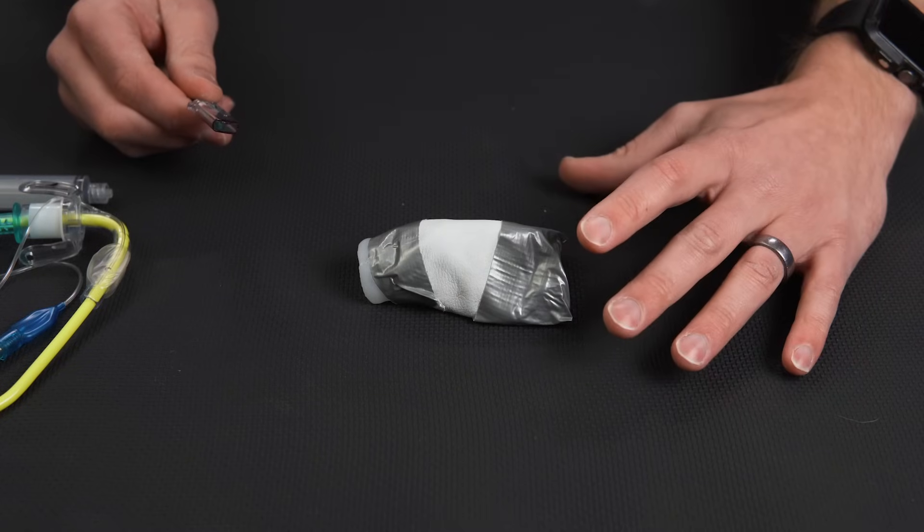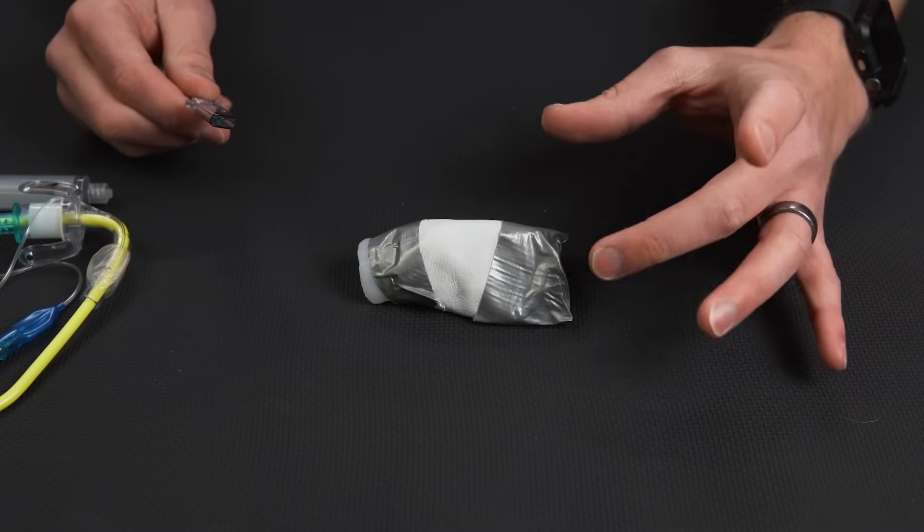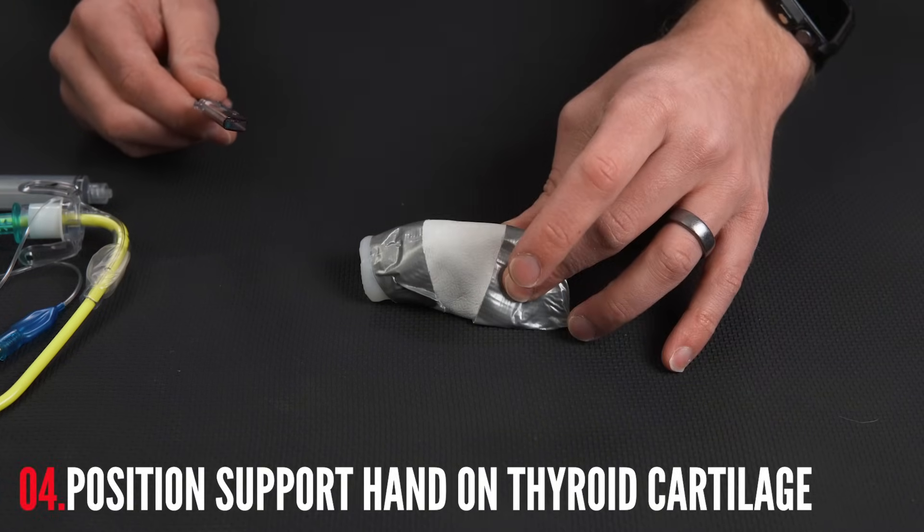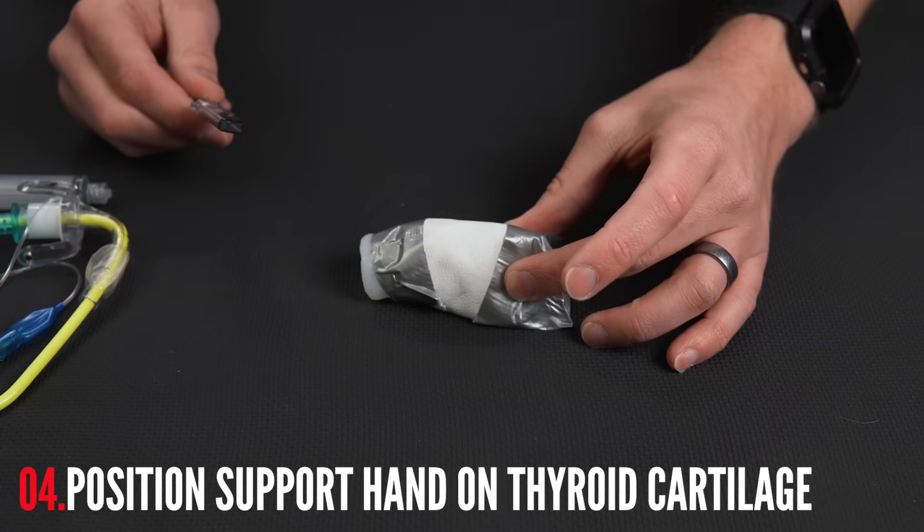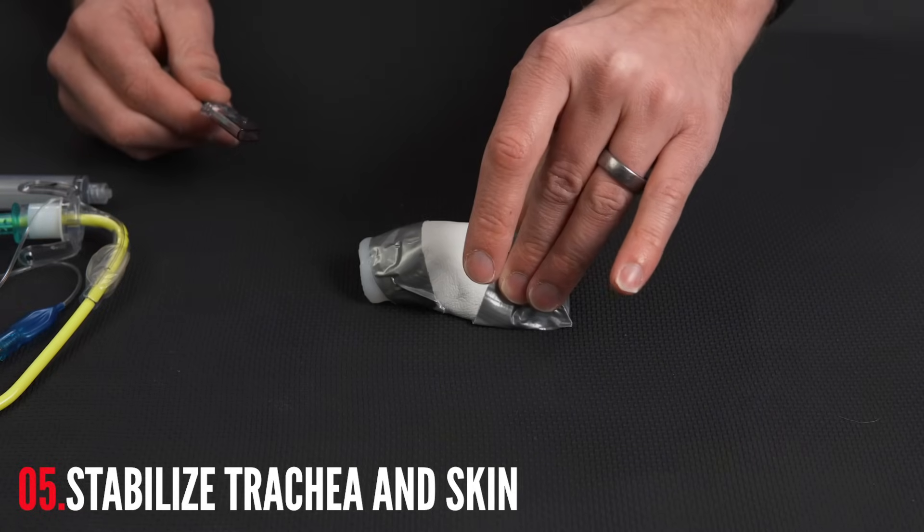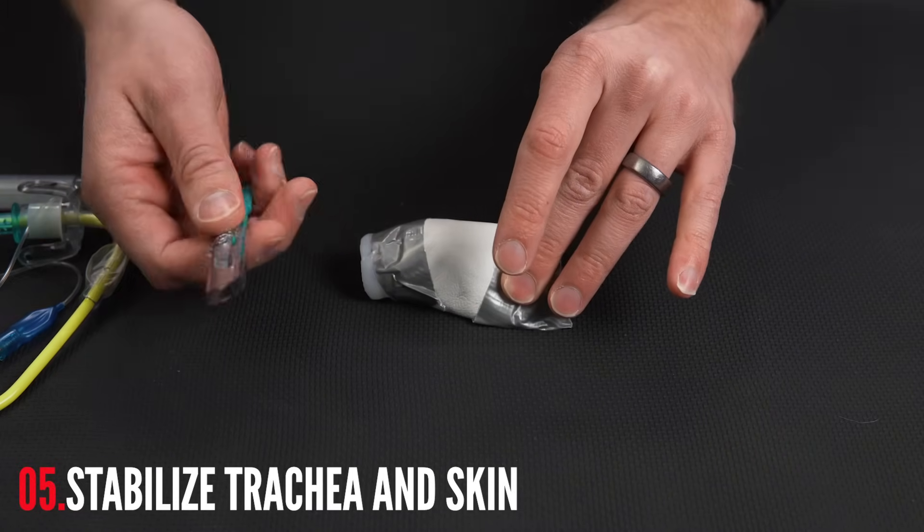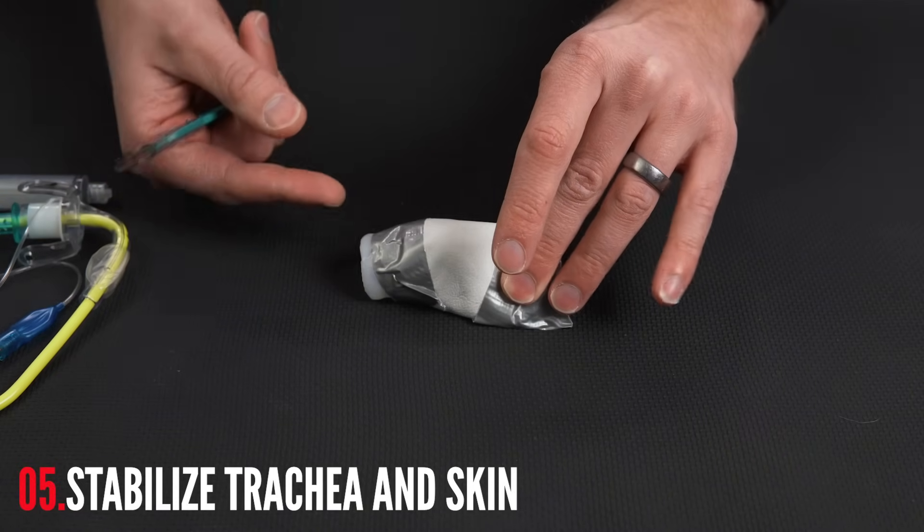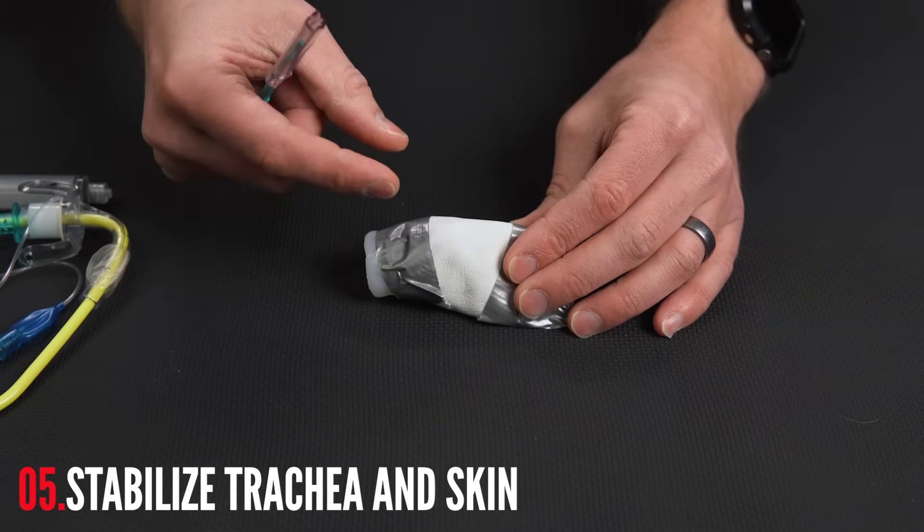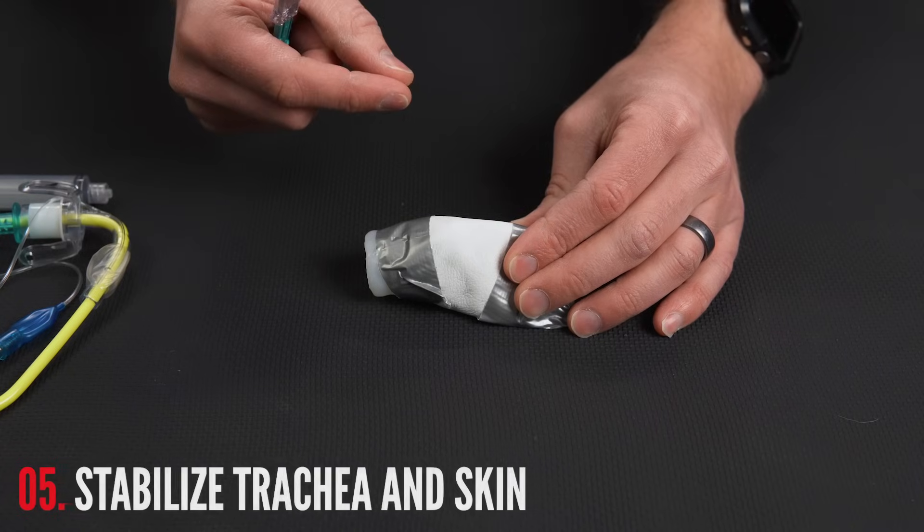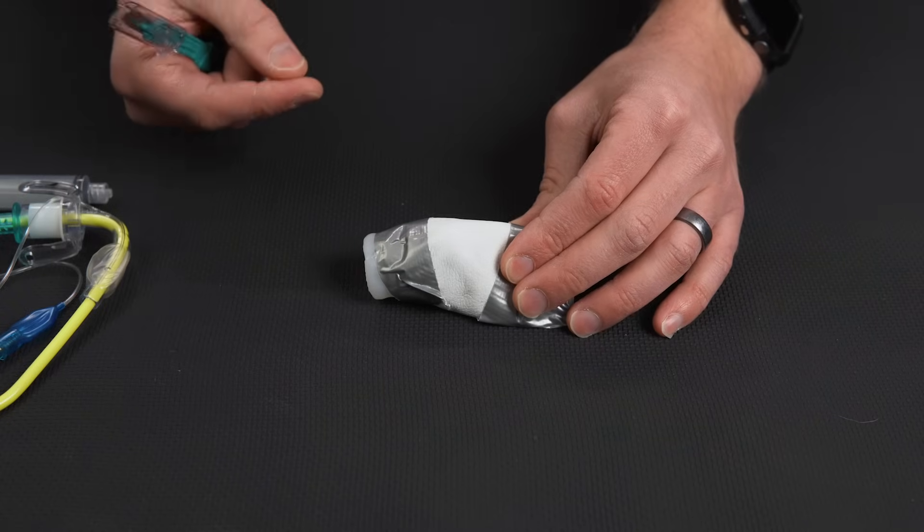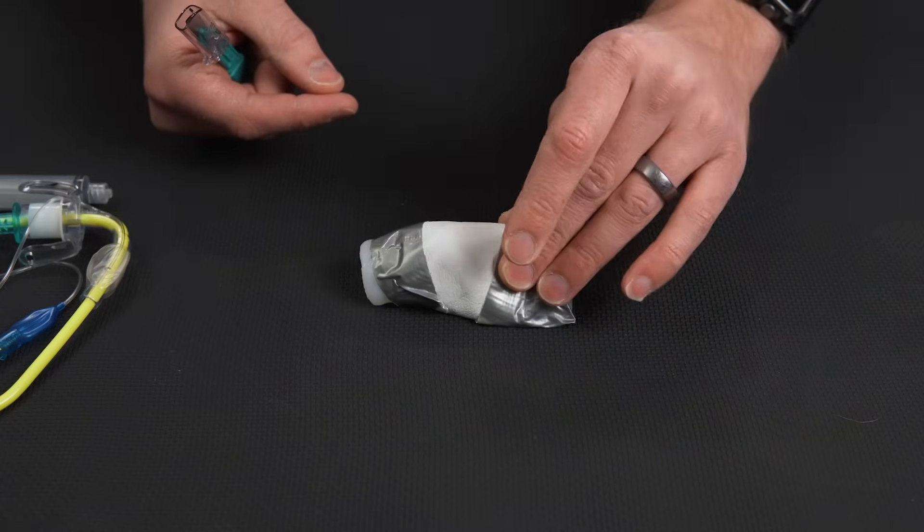So with my non-dominant hand, I'm going to take my middle finger and my thumb, and I'm going to find the actual thyroid cartilage. We're going to press down. This is to keep the skin and the trachea from moving irrespective of each other. It's dangerous when you create a cut through the skin, sometimes the trachea will move and you'll actually lose the hole you put in the cricothyroid membrane.